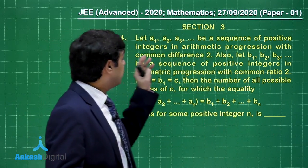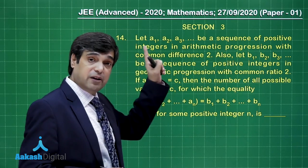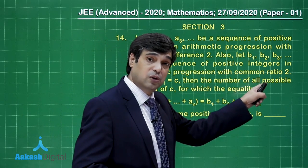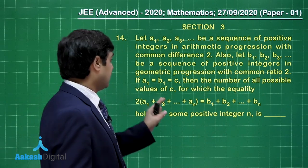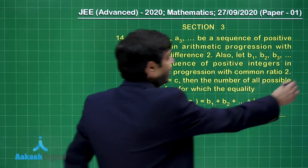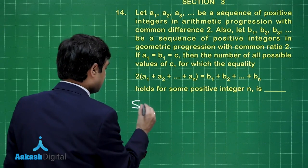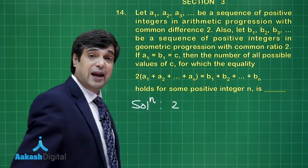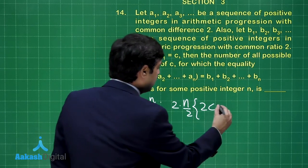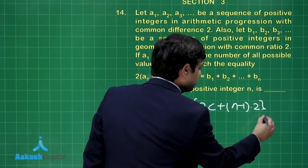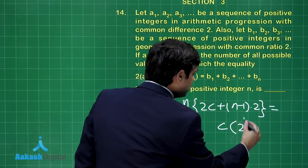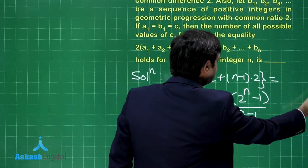Let A1, A2, A3 be a sequence of positive integers in AP with common difference 2. B1, B2, B3 be a sequence of positive integers in GP with common ratio 2. If A1 equals B1 equals C, then the number of all possible values of C for which the equality of the sum of N terms holds for some positive integer N. Let us try: twice the sum of N terms in AP is N/2 times (2·A1 + (N−1)·D), where A1 = C and D = 2, equal to the GP sum C·(2^N − 1)/(2−1).